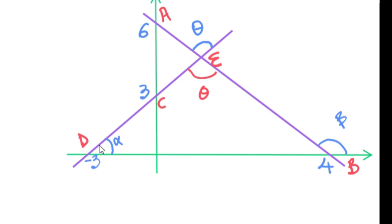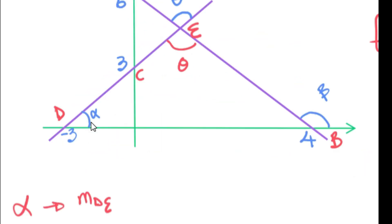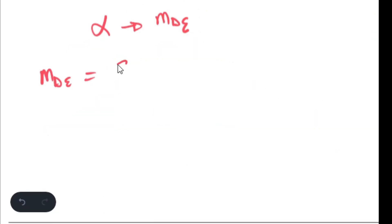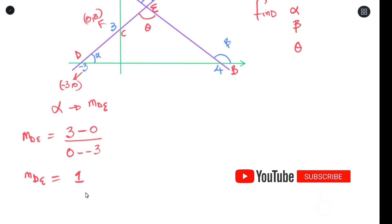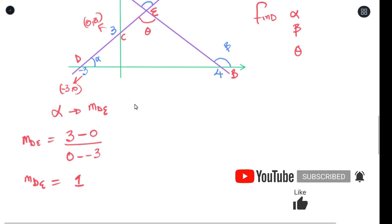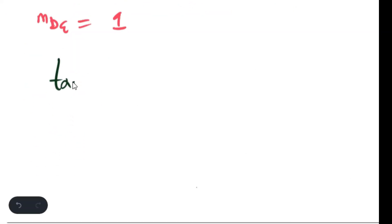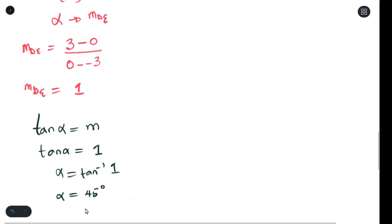So we need to get the gradient of line DE. Looking at this over here, we notice we have x-intercept and a y-intercept at D. Now the coordinate of this x-intercept is negative 3 and 0 and the coordinate of this intercept here would be 0 and 3. Now we'll get the gradient of this line using those two points. So as you can see the gradient of DE is 1. So for us to get alpha, we will use our angle of inclination formula. So our first answer alpha is equals to 45 degrees.